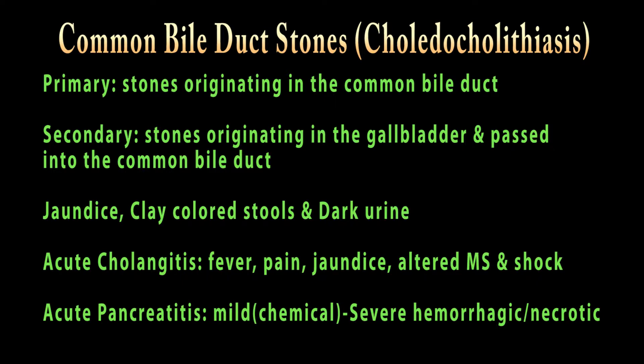Choledocholithiasis can potentially lead to two serious conditions. The first is acute cholangitis, or infectious inflammation of the bile ducts within the liver, characterized by fever, pain, jaundice, and altered mental status that can progress into septic shock. The second is acute pancreatitis, which can range from mild or chemical pancreatitis — where the patient only has elevated amylase and lipase enzymes — to severe hemorrhagic or necrotic pancreatitis, which can be a life-threatening condition.